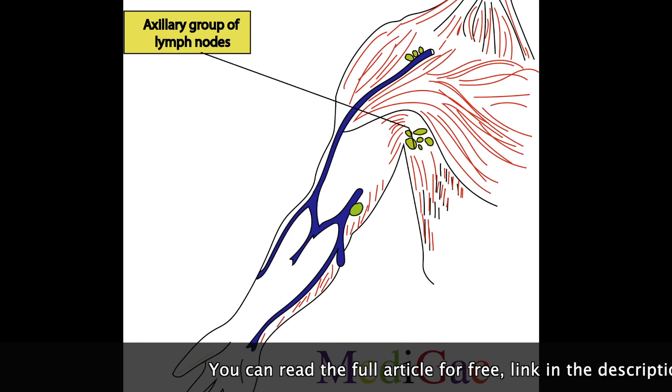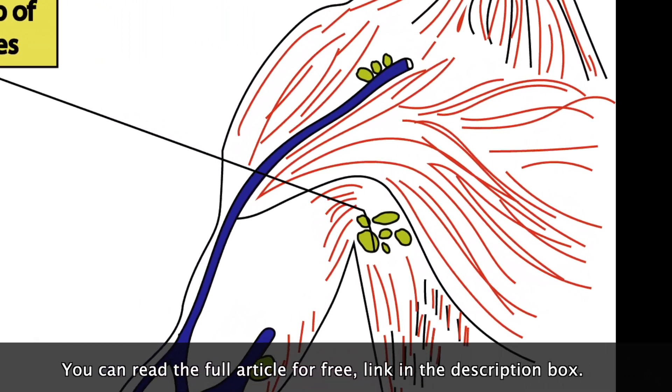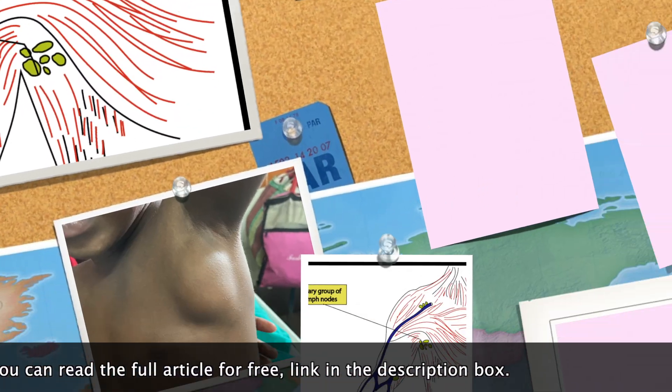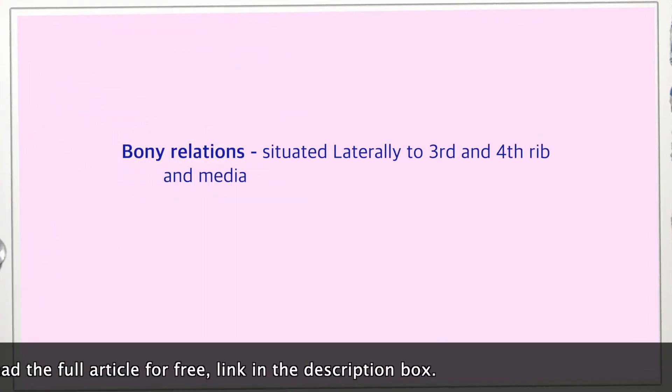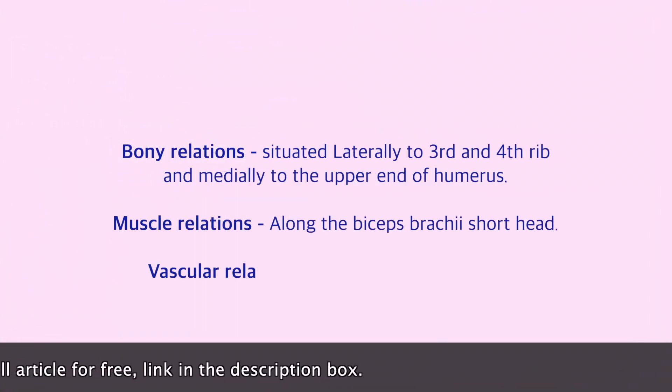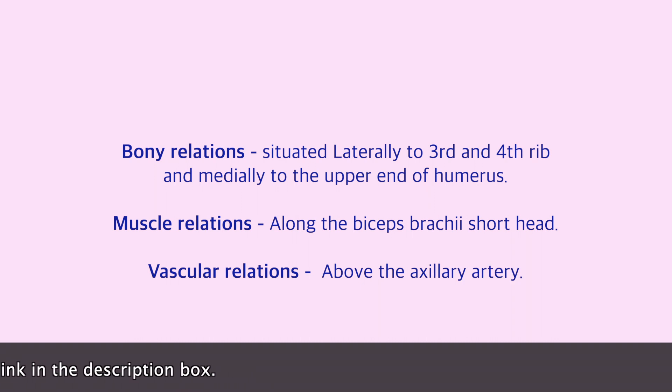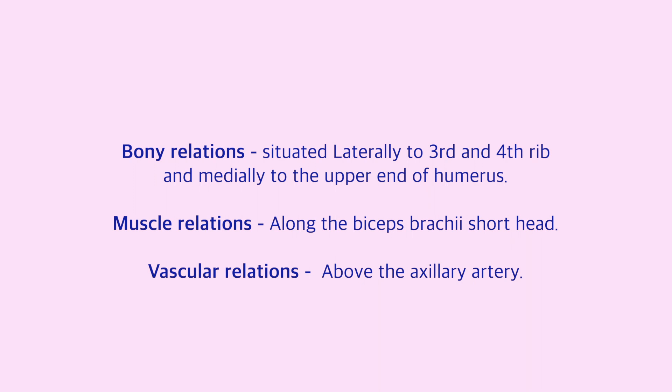Location, position, and relations of axillary groups of lymph nodes. Bony relations: it is situated laterally to the third and fourth rib and medially to the upper end of humerus. Muscle relations: it is along the biceps brachii short head. Vascular relations: it is above the axillary artery.